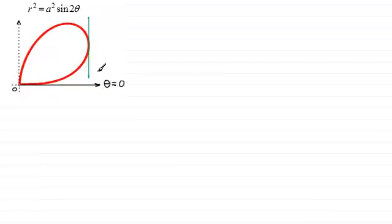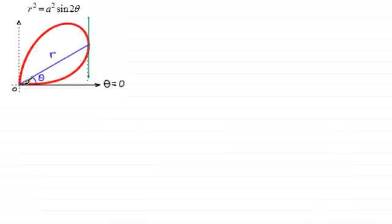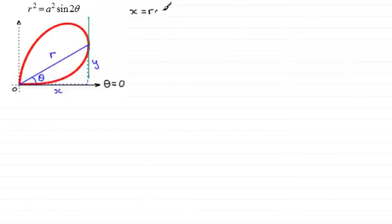What we've got to do is think of coming from the pole to our point — this would be r, and the angle that this makes with the initial line would be theta. If we construct a right-angle triangle, taking this distance as y and this distance as x, then by trigonometry x is going to be equal to r cos theta. This is an equation we'll be turning to for any question like this.